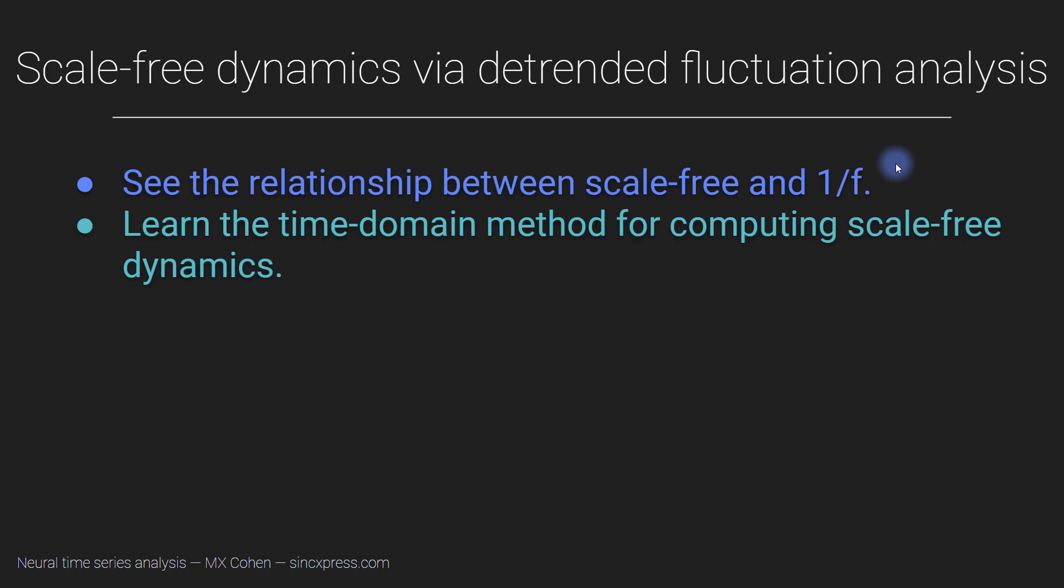And then I also mentioned that another option for dealing with the 1 over f structure is to embrace it, to analyze it and study it, because this 1 over f structure reflects the fact that the brain is in a scale-free state, or a state that approaches criticality. And so that's what we're going to focus on in this video.